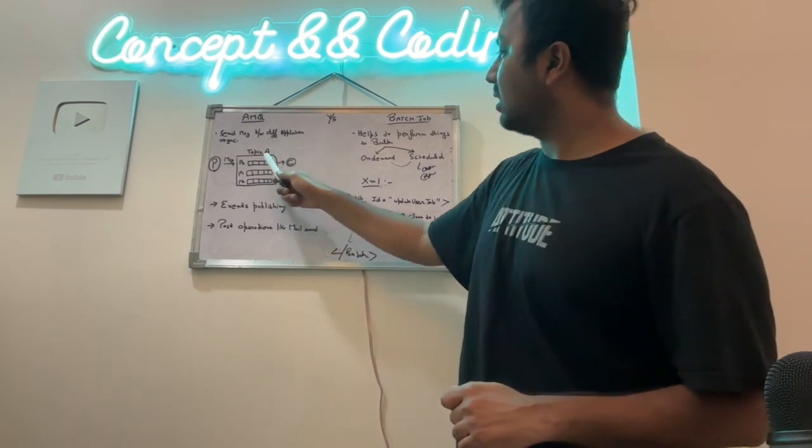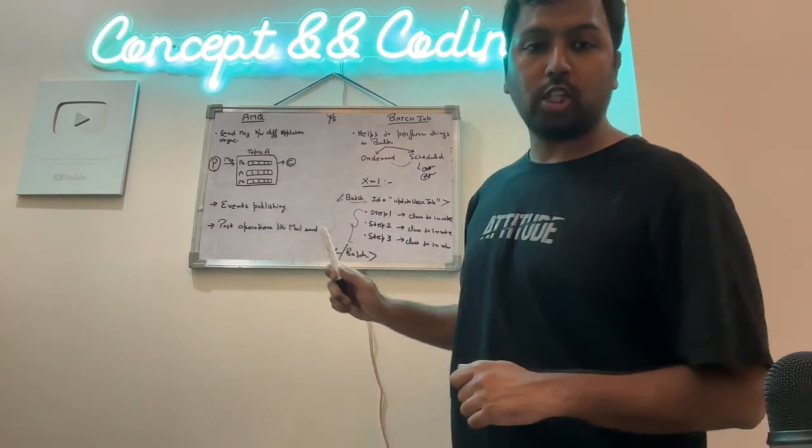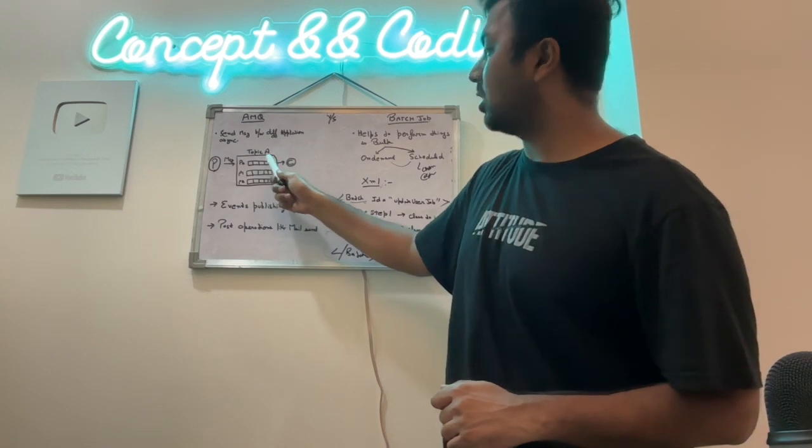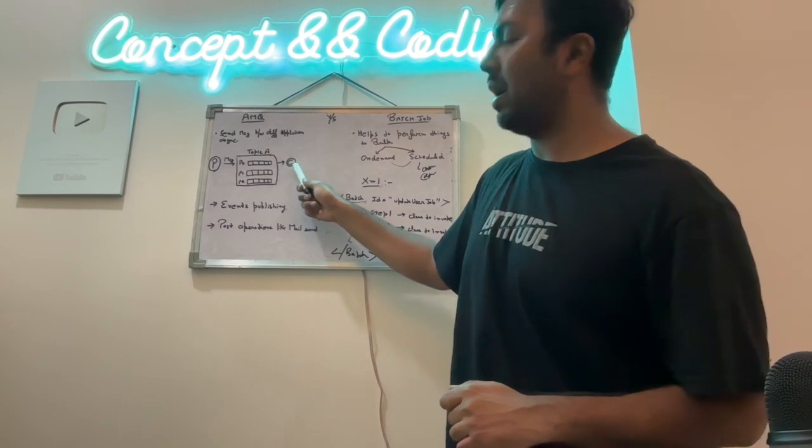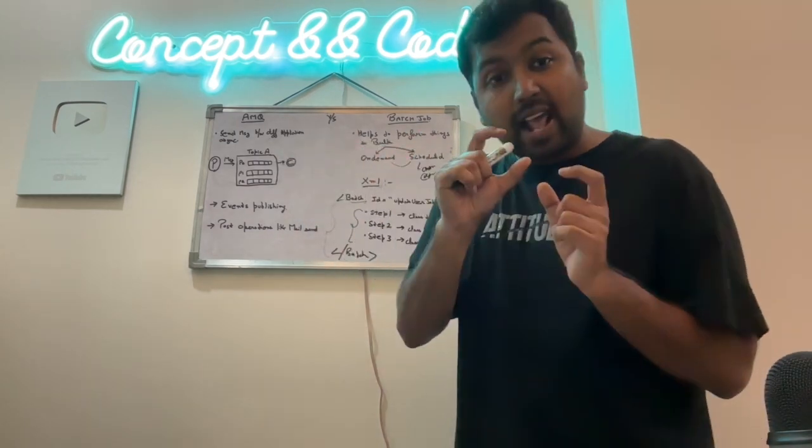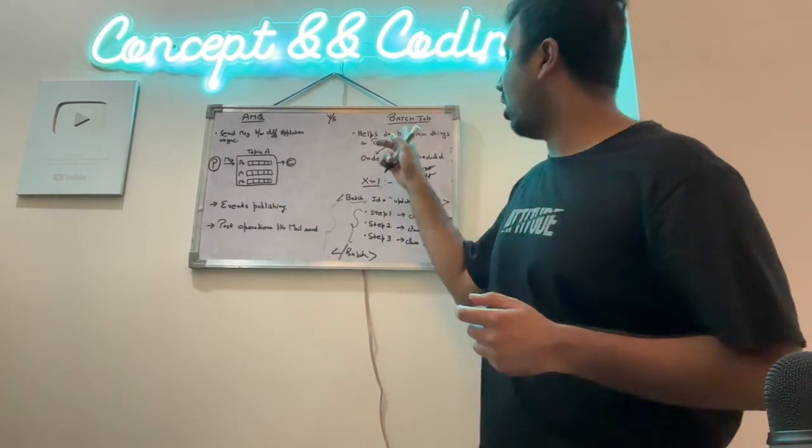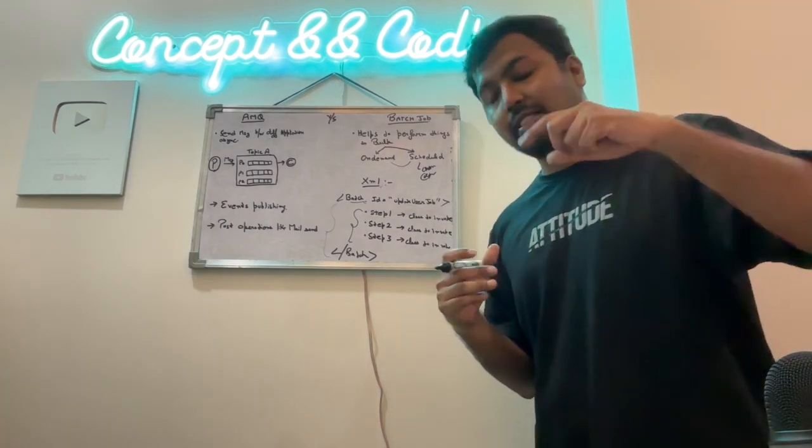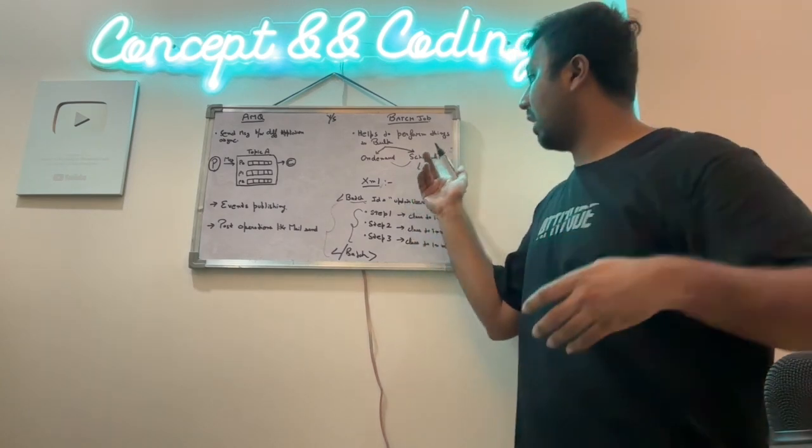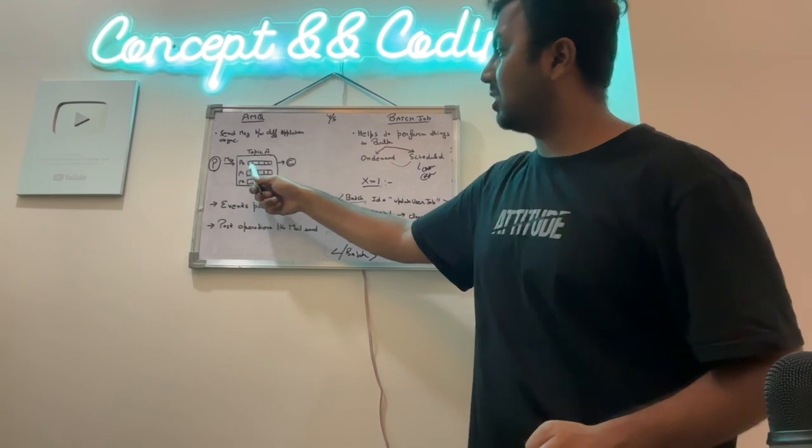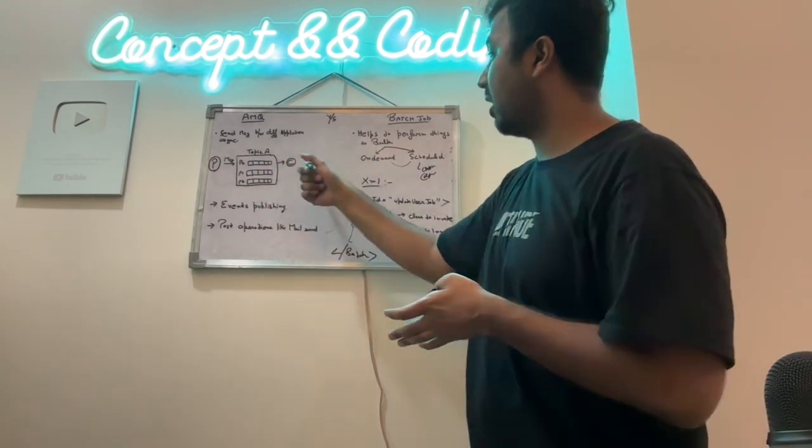Understand the difference, as soon as message is available, consumer tries to read it. It's not like batch where even if the message is available, it will keep on accumulating and only runs when required or at a particular time. Here, as soon as message is available, it tries to process it. So that is one of the key differences between batch and AMQ.